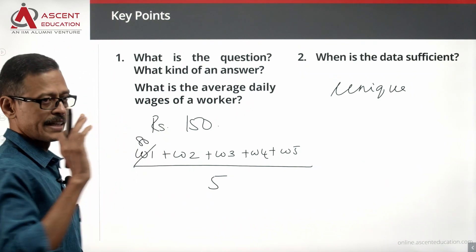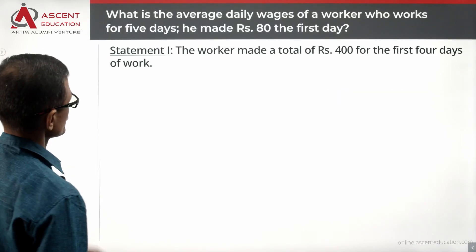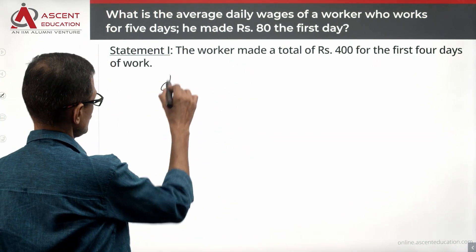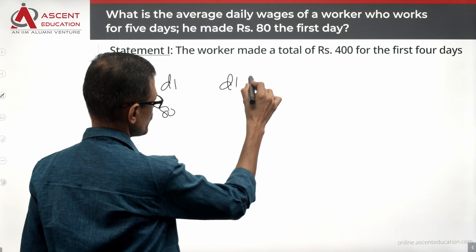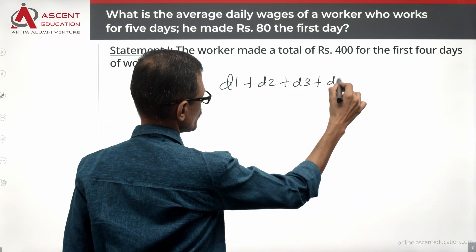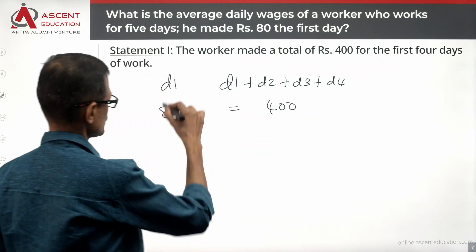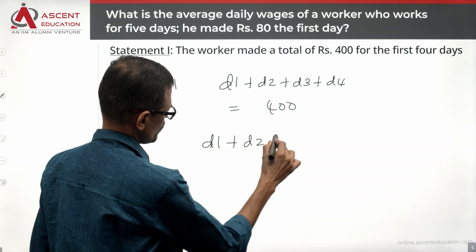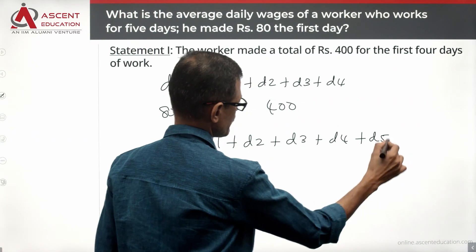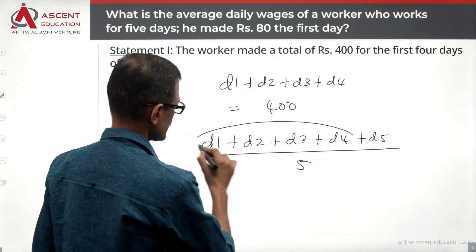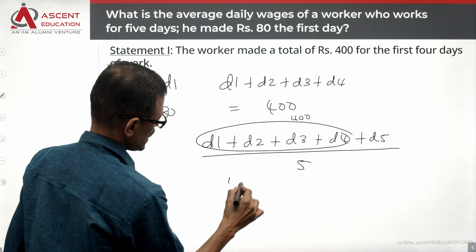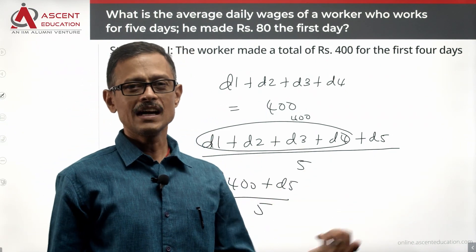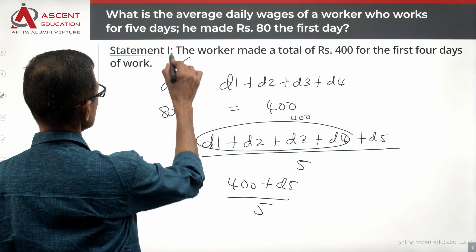W1 is equal to 80. Now take a look at Statement 1: the worker made a total of 400 rupees for the first 4 days. So D1 plus D2 plus D3 plus D4 equals 400. What we need to find is D1 plus D2 plus D3 plus D4 plus D5 divided by 5. We can replace the first four days with 400, leaving us with (400 plus D5) divided by 5. Day five's salary is unknown, so we will not be able to answer this question.